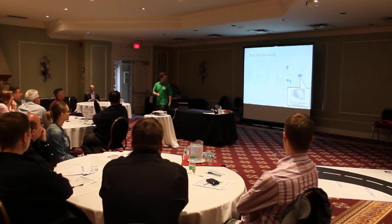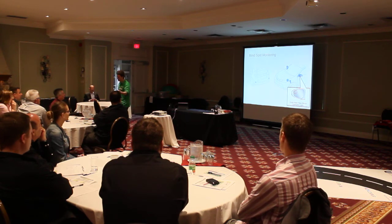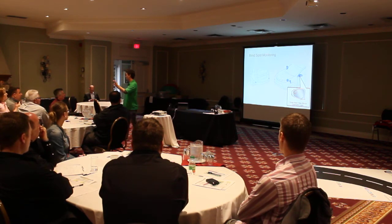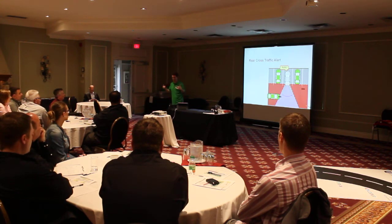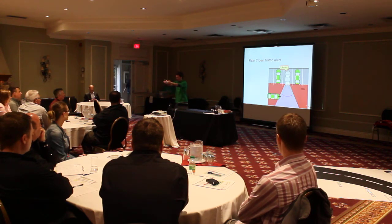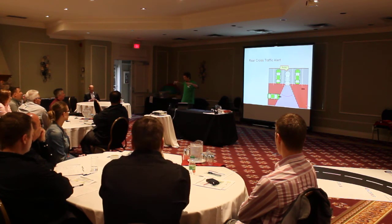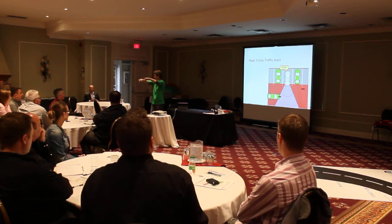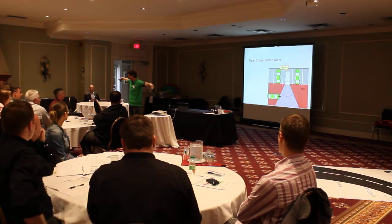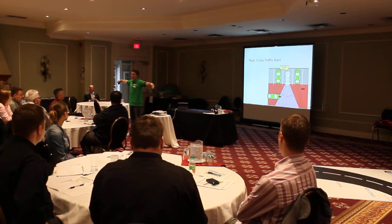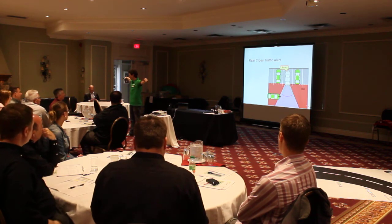Blind spot monitoring. Blind spot monitoring and rear cross traffic alert piggyback the same systems. There are sensors inside the bumpers, and what they're looking for are the zones where you can't see the car. If you picture this as a car, the rearview mirror has its zone, the side mirrors have zones, but basically from a straight line drawn from the side of the vehicle out to the B-pillar — that's the blind spot, and that is where the system is looking for vehicles.